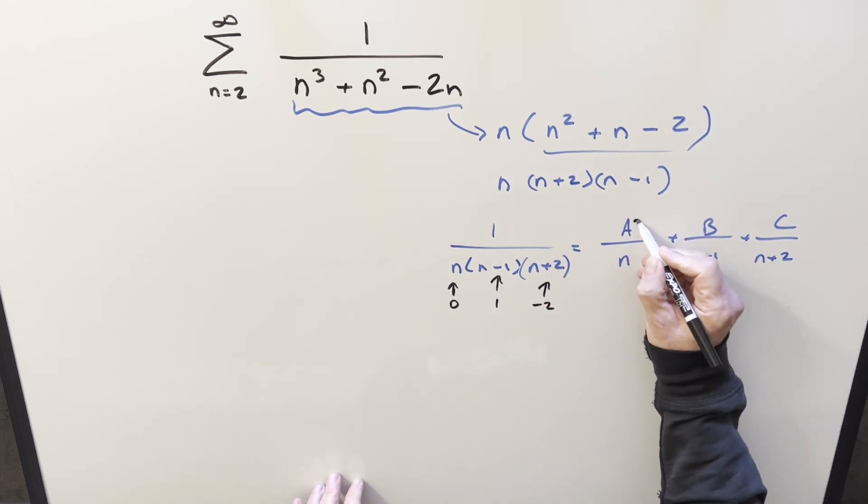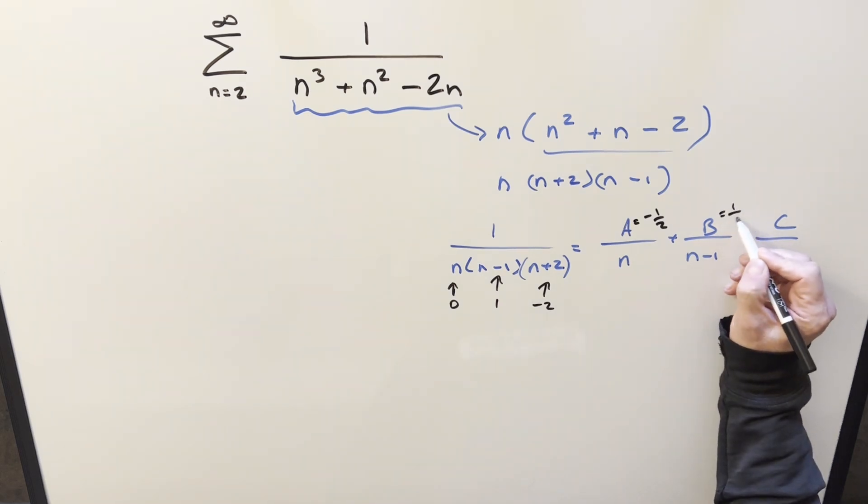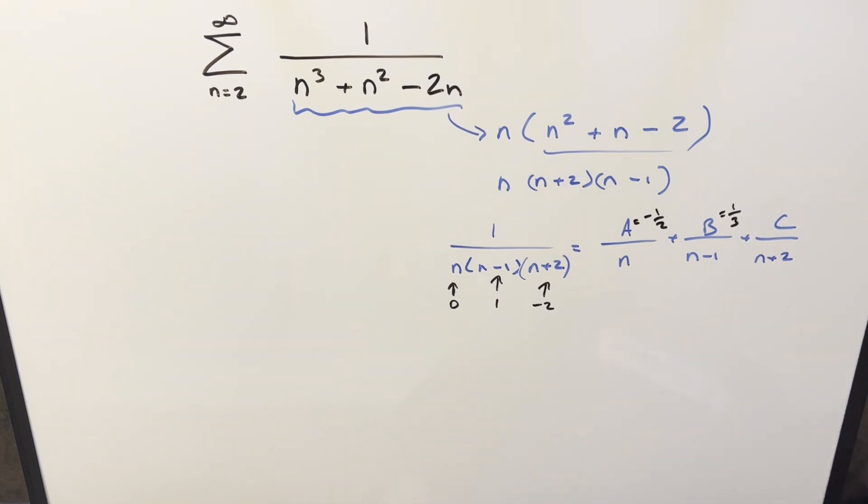And then the fraction you're left with covering up that one term is going to be your A, B, and C value. So what you're going to get is your A value is going to be minus 1 half, B is going to be 1 third and C is going to be 1 over 6.